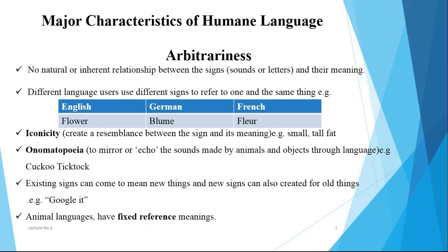The second characteristic of human language is arbitrariness. There is no natural or inherent relationship between a sign and its meaning; therefore different language users use different signs to refer to one and the same thing. For example, in English we use the word 'floor', but in German and French different words are used for the same object.